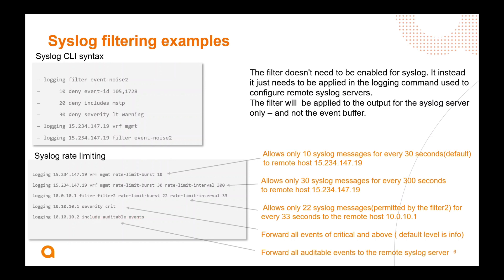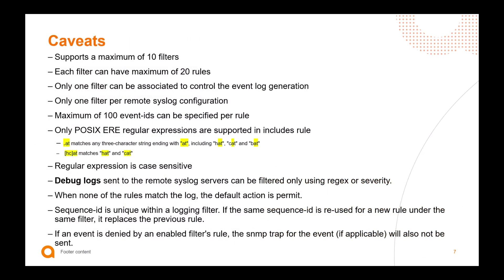Some caveats: we support a maximum of 10 filters on the switch, and each filter can have a maximum of 20 rules. Only one filter can control the event log itself, and there is only one filter per remote syslog configuration. However, we can have multiple syslog servers, which means we can have multiple filters — one filter per syslog server — with multiple syslog servers present. The maximum number of event IDs that can be specified per rule is 100.